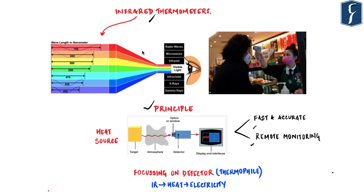You must have read about and seen images of passengers arriving from foreign countries being screened at airports with the help of infrared thermometers. Before going into the principle, let's first understand what infrared means. Infrared radiation is just one type of radiation within the electromagnetic spectrum. The visible spectrum lies in the middle — infrared has lesser frequency than visible light, lesser energy, and a longer wavelength than the visible spectrum.